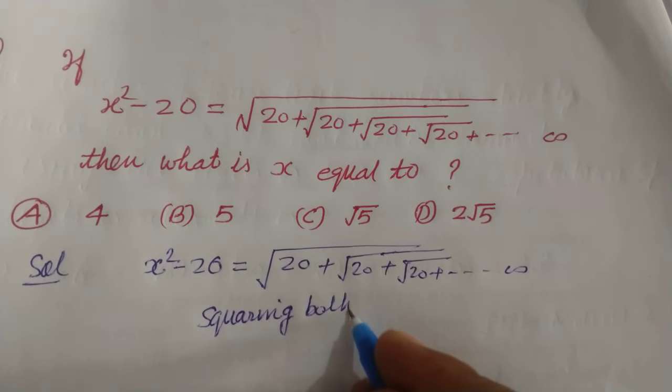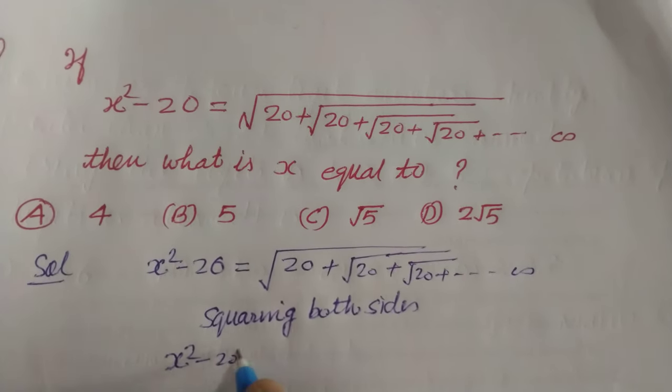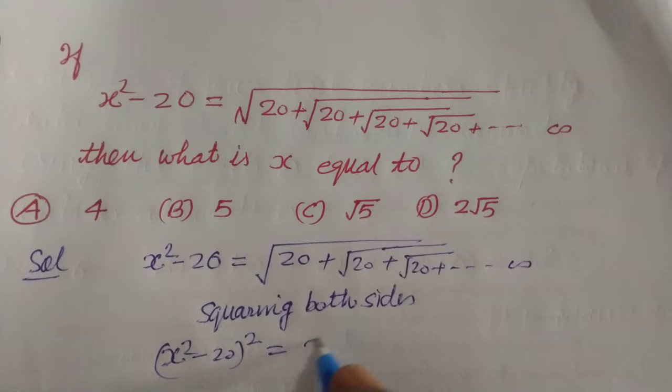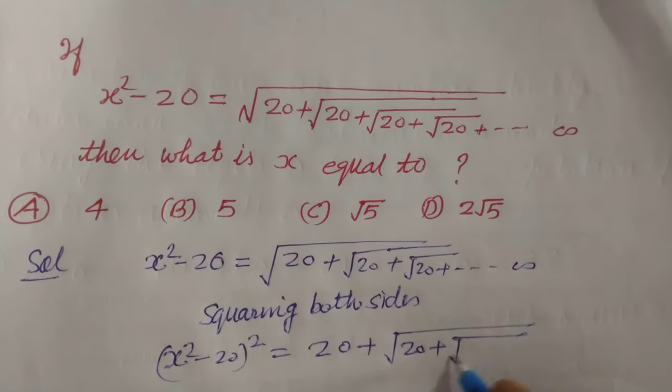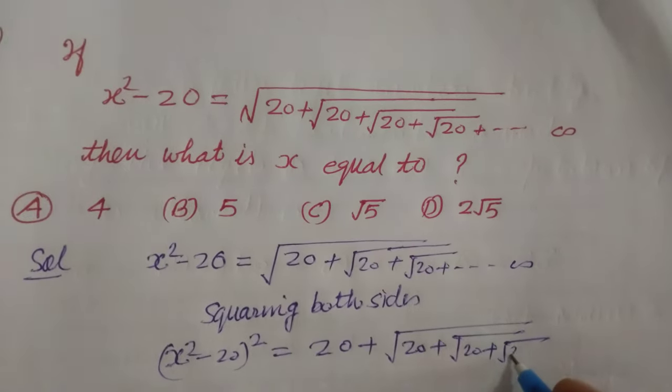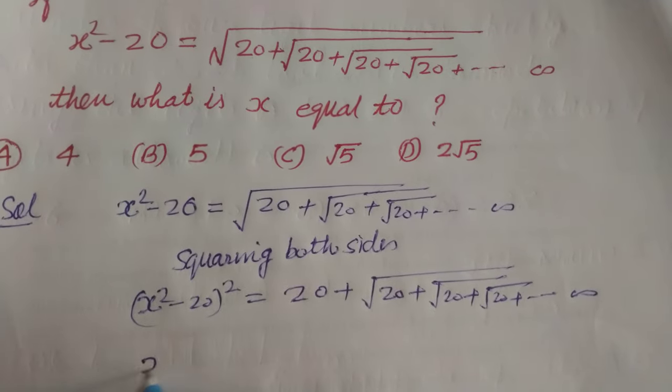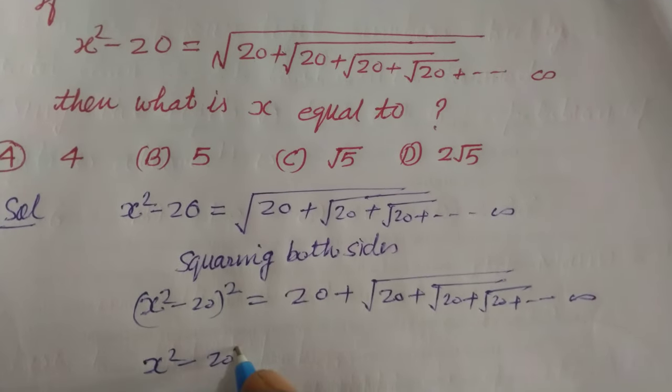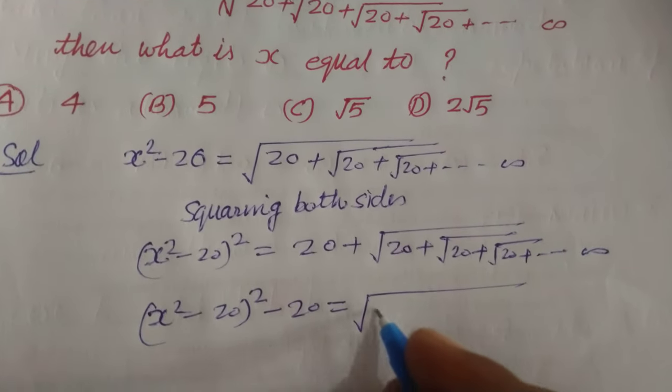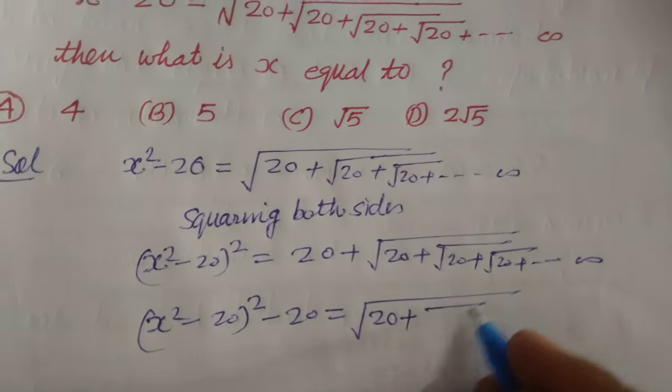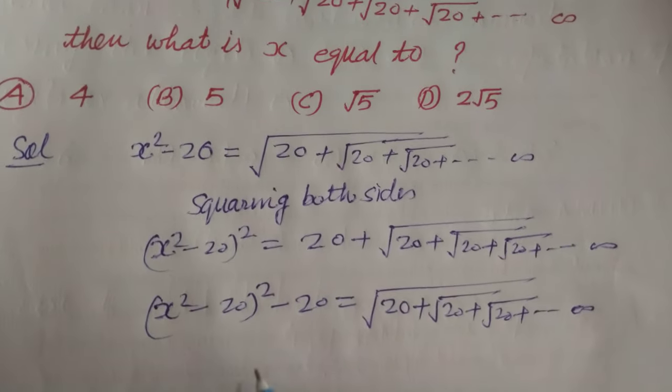We get X square minus 20 whole square equal to 20 plus under root 20 plus under root 20 plus under root 20 and so on. So, X square minus 20 whole square minus 20 equal to under root 20 plus under root 20 and so on.